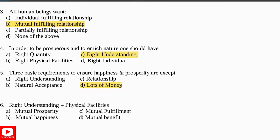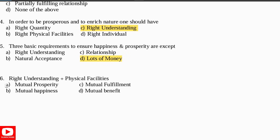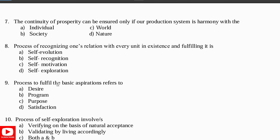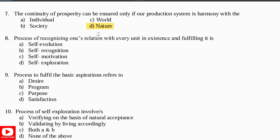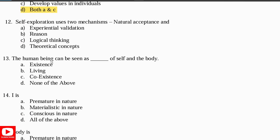We need right understanding, right relationship, and natural acceptance — we don't need lots of money. Right understanding plus physical facilities means mutual prosperity. Question 7: The continuity of prosperity can be ensured only if our production system is in harmony with what? Answer: Harmony with nature. Question 8: The process of recognizing one's relation with every unit in existence and fulfilling it is called self-exploration. Question 9: The process of self-exploration involves both — verifying the basis of natural acceptance and validating by living accordingly. Question 10: The purpose of value education is both fostering universal core values and developing values in individuals.